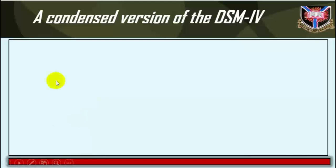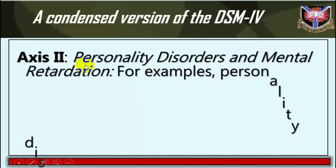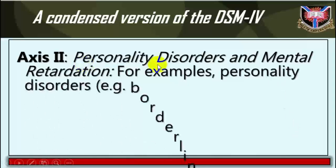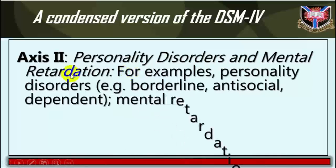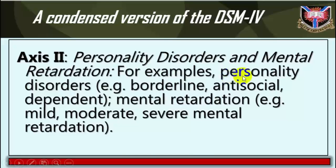Axis 2: Personality disorders and mental retardation. Examples of personality disorders include borderline, antisocial, and dependent personality disorders. Examples of mental retardation include mild, moderate, and severe mental retardation.